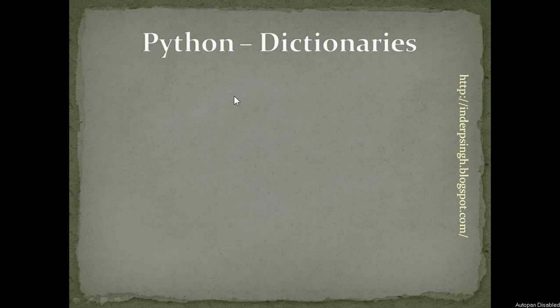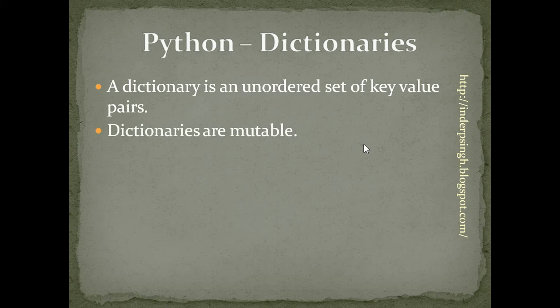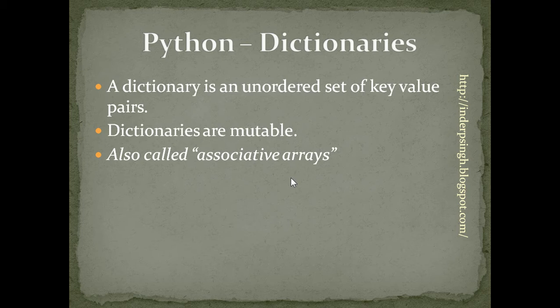Hello and welcome to Python tutorial 18 on Dictionaries. A dictionary is a set of key-value pairs. These key-value pairs, or items, can be stored in any order by Python. Dictionaries are mutable, which means that we can update any item of a dictionary. In some other programming languages, such data structures are also called associative arrays.